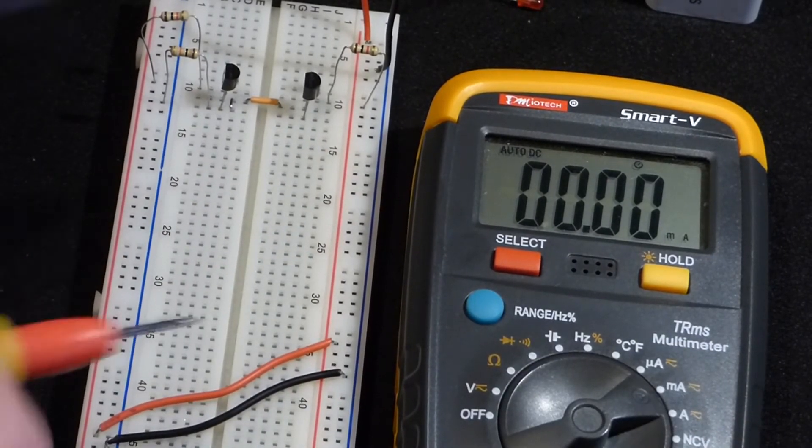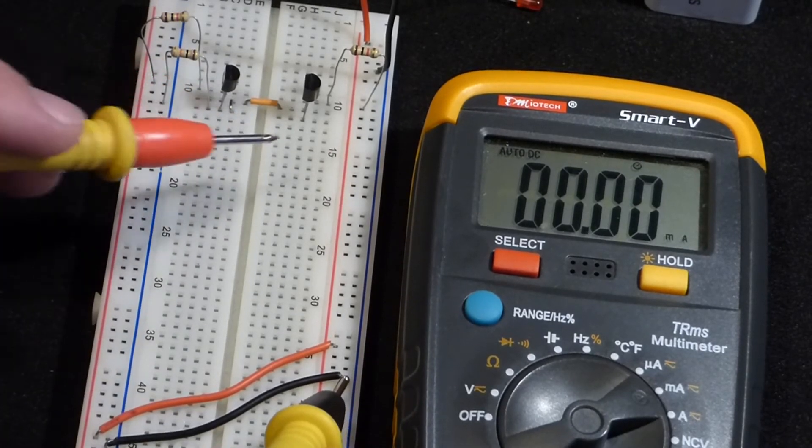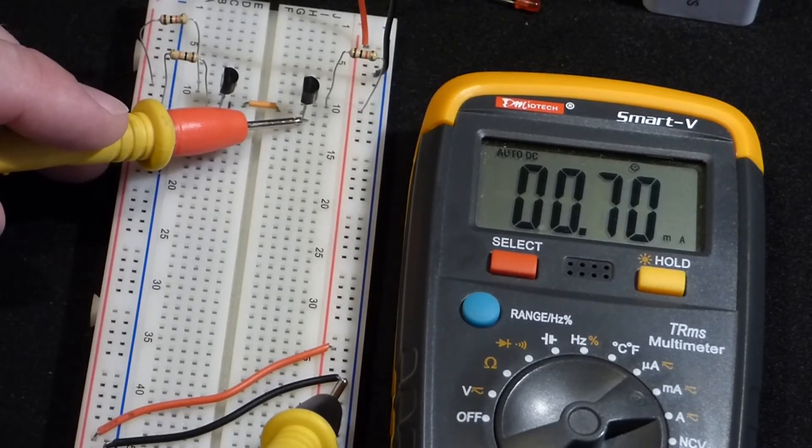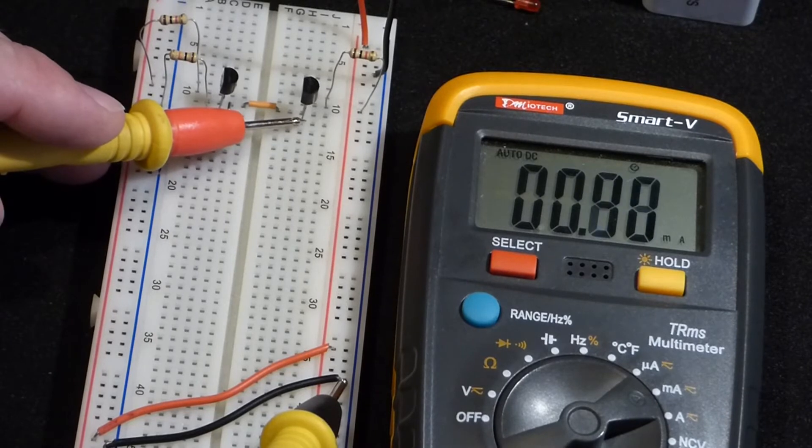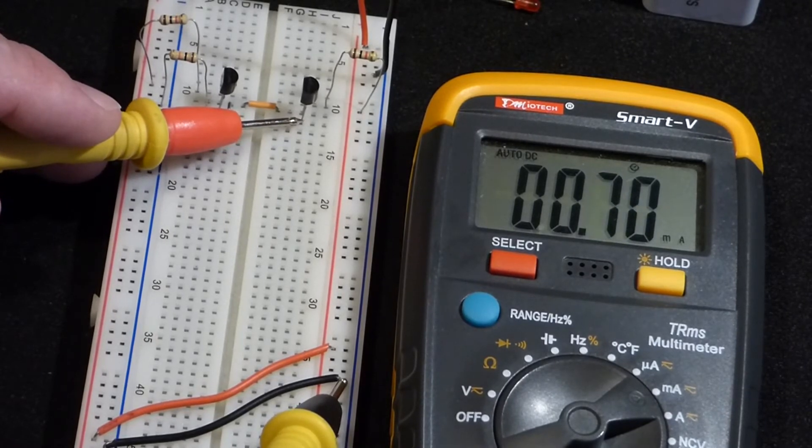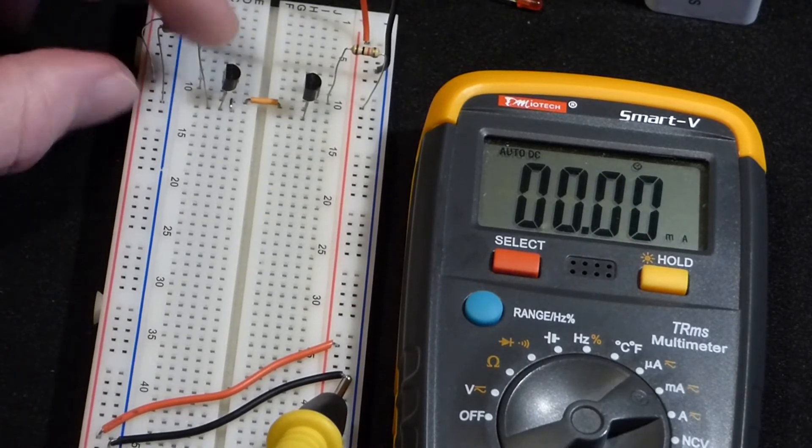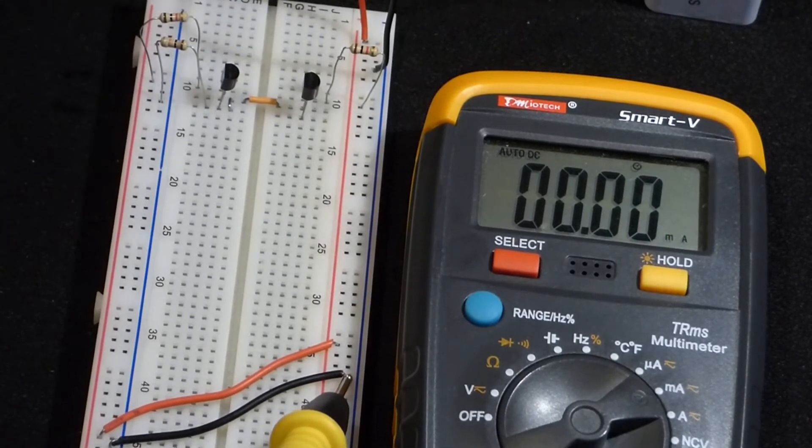That's the only difference. Now we'll measure the current coming out of the collector there when we complete the circuit, and you see it's about 0.7 milliamps, so practically the same. The current difference is probably more due to my connection with the probe than actual current difference from the circuit.